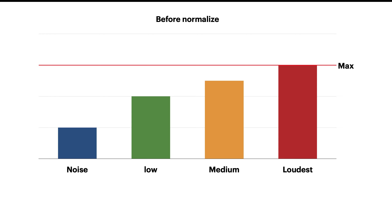First, normalization. In simple terms, normalization can be a set of volume control. Here you can see four groups of audio based on its loudness. This red bar is the maximum loud sound in the audio, and this blue one is the volume of the noise.